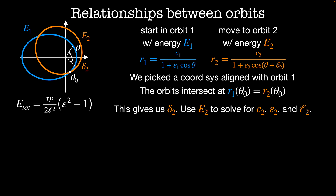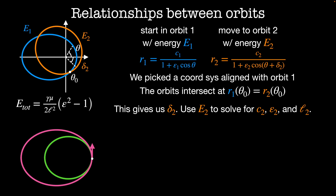How should I think about going from orbit one to orbit two? We start in the first orbit, and at some point inject energy into the system by applying a thrust. This bumps us into a new orbit. If we start at velocity V1, then after the thrust we're traveling at V2, which is some constant lambda times the initial velocity V1. This relationship has a knock-on effect for all of our other constants.